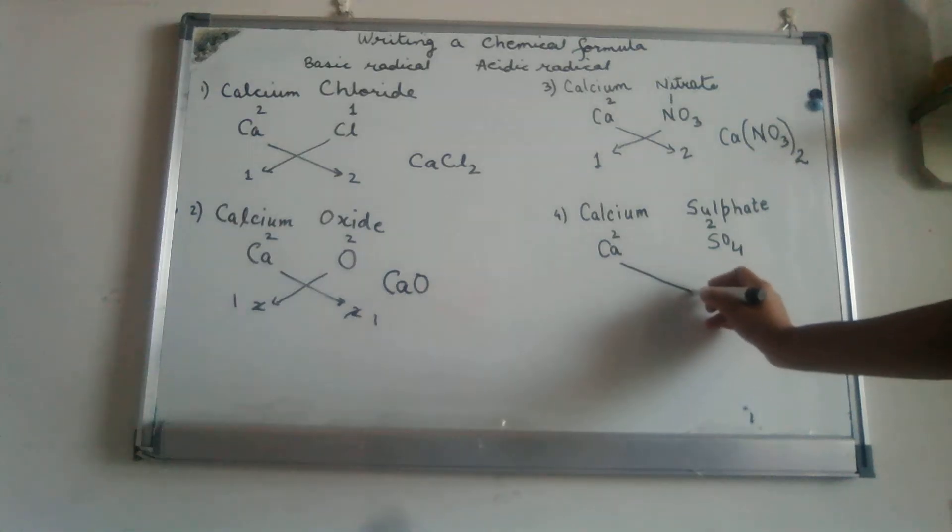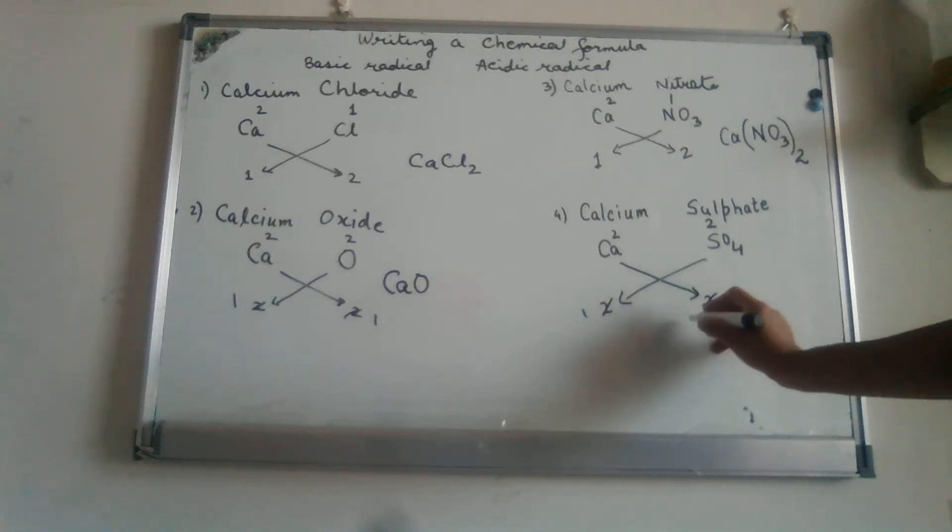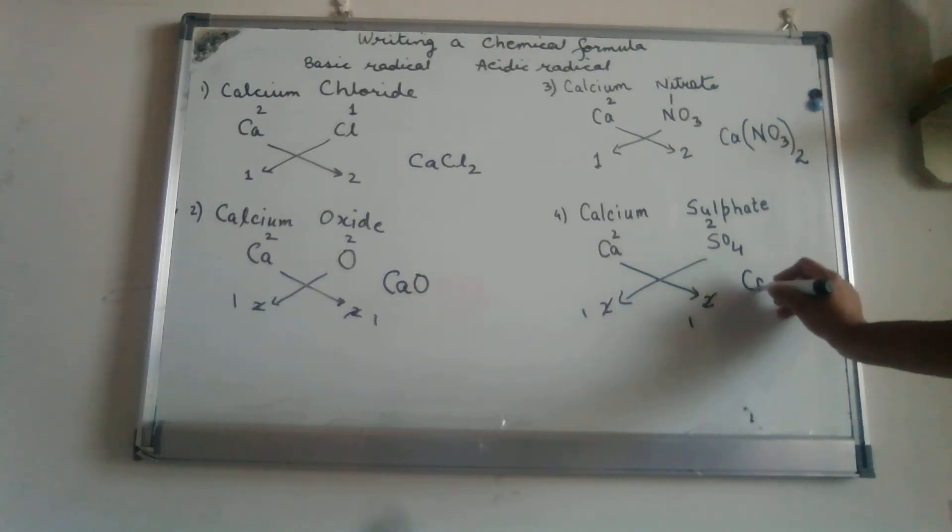Come to the last example in the series. 2 and a 2, and then we have 2 times 1. So the formula for calcium sulfate becomes CaSO4.